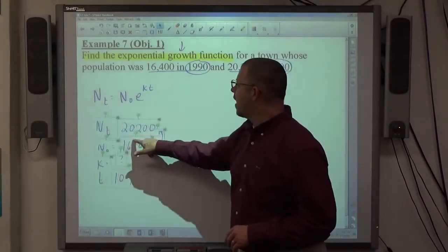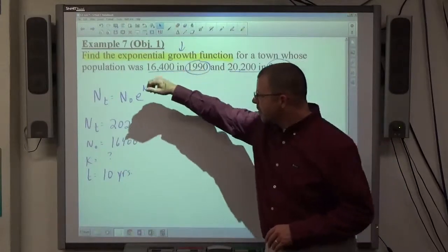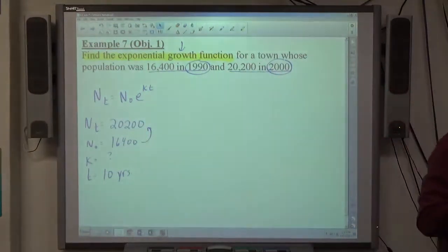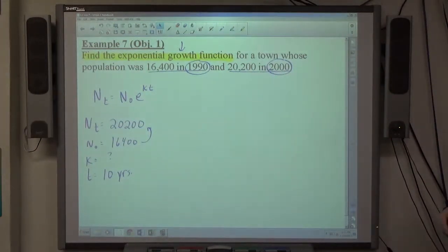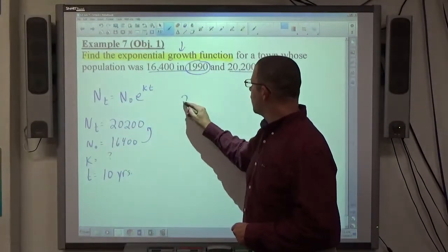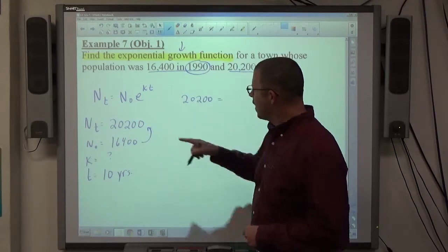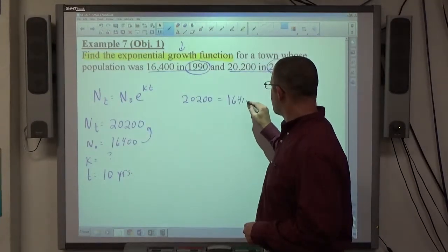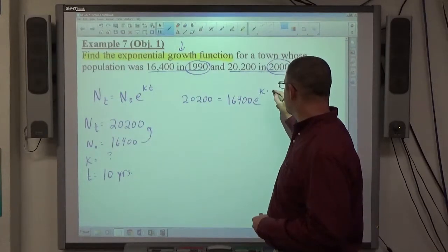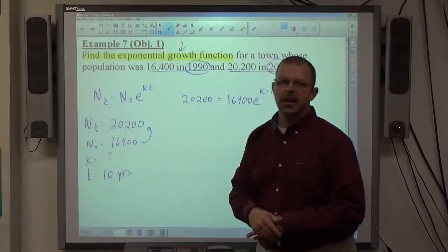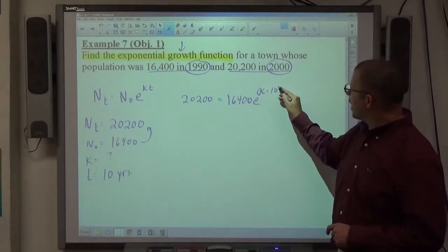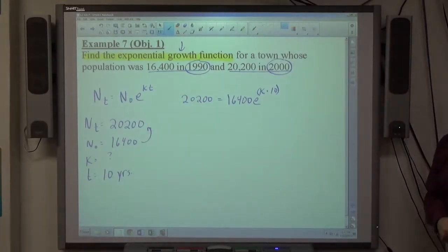As soon as you see, find the exponential growth function, create the function structure, and then identify everything you can find out from the words they give you that's going to help you set up this equation. Then, we substitute everything in that we know. So, N sub T is 20,200 equals N sub 0 is 16,400, E is E, K is something I don't know yet, and T is 10, and KT means K times T, so K times 10 is what happens up there. Keep in mind that both K and 10 are exponents. They're both up in the power level of this thing.